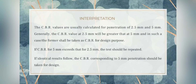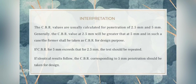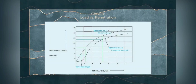For interpretation, CBR values are usually calculated for penetration of 2.5 mm and 5 mm. Generally, the CBR value at 2.5 mm will be greater than at 5 mm — in such a case, the 2.5 mm value is taken for design. If the CBR value at 5 mm exceeds that at 2.5 mm, the test should be repeated. If identical results follow, the CBR corresponding to 5 mm penetration will be taken for design. The graph shows load versus penetration for specimens, indicating which requires correction and which does not.